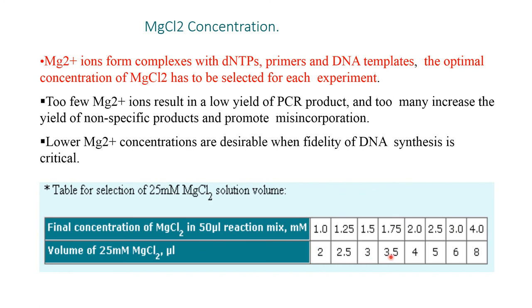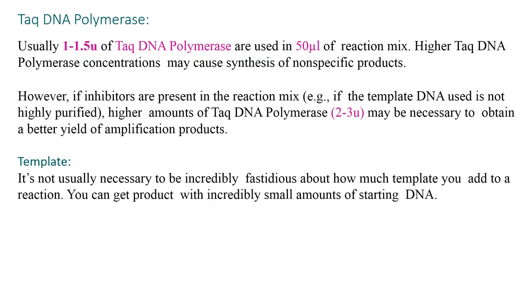Taq DNA polymerase: usually 1 to 1.5 units of Taq polymerase are used in 50 microliters of reaction mixture. Higher Taq polymerase concentrations may cause synthesis of non-specific products. However, if inhibitors are present in the reaction mixture, for example if the template DNA is not highly purified, higher amounts of Taq DNA polymerase may be necessary to obtain a better yield of amplification products.